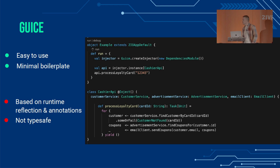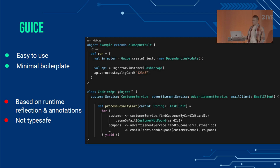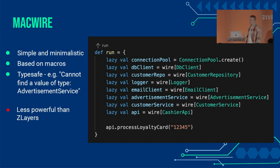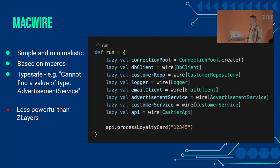Let's take a look at some frameworks. Guice has almost minimal boilerplate — it uses the inject annotation, you annotate your constructors, and it just works. But because it's based on runtime reflection and runtime processing of annotations, it can add a performance hit, and everything will fail at runtime if you did it incorrectly. MacWire is another framework based on macros — very minimalistic — and if you do something wrong, you get error messages at compile time. There are not really any drawbacks except that it's less powerful than ZLayers. ZLayers introduces the idea of turning a constructor into a value.